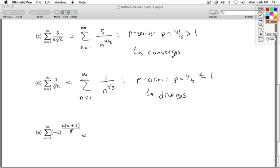So when n equals 1, I get 1 times 2 over 2. So that's negative 1 to the first power, which is negative 1. Plus, plug in n equals 2.